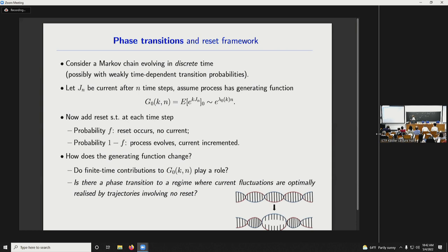That means that there's no current that flows. The current stays at whatever value we've measured so far. But there's no increment in the current. And the process is reset, perhaps by resetting these transition probabilities or by putting a particle back to a particular place, something like this. And with probability 1 minus f, the process just evolves in its ordinary way and the current is incremented. And the question is, how does the generating function change when we add this reset? In particular, what we do here is we say, well, in the long time limit, there are lots of sort of finite time corrections that don't matter. But if we keep resetting our original process, then perhaps those finite time contributions do play a role. And in particular, is there a phase transition to some regime where current fluctuations are optimally realized by having trajectories that just don't reset at all?